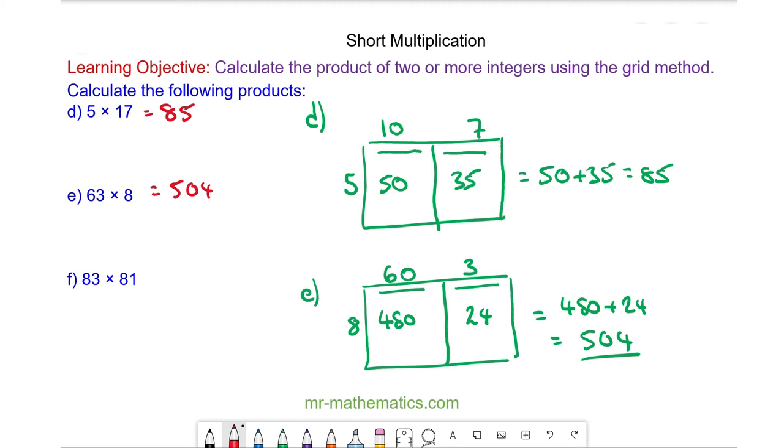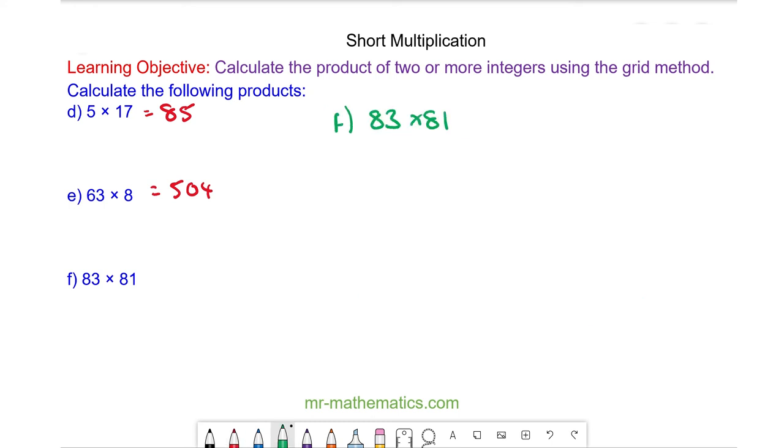Okay and the final challenge. Do you want to try and work out question f by pausing the video and you can resume it when you're ready. For question f we need to add another row to our grid. So now we have a square I'm going to write as 80 and 3 and 81 I'm going to write as 80 and 1.